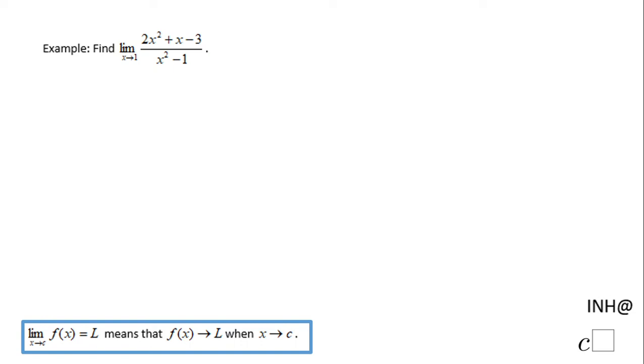Welcome or welcome back. I need help at C square. In this example we have to find this limit: the limit as x approaches 1 of 2x² + x - 3 over x² - 1.